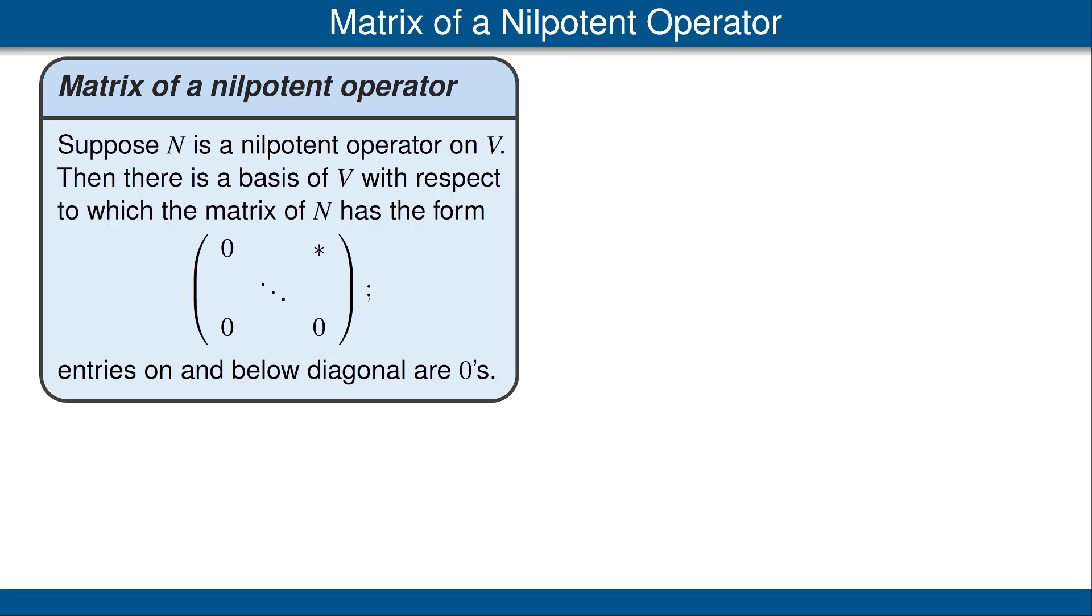Thus, this result is new only in the case when the scalar field is the field of real numbers. However, the proof we're about to give works for both real and complex vector spaces, and even in the case of complex vector spaces where we already know this theorem, this proof is somewhat easier than our earlier proof and it gives some additional insight.